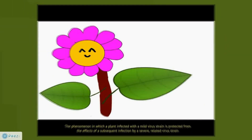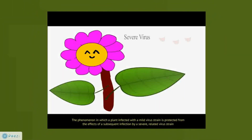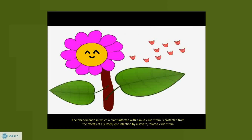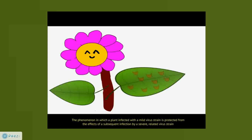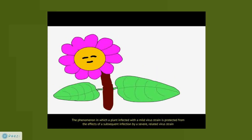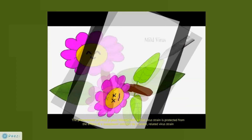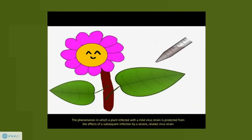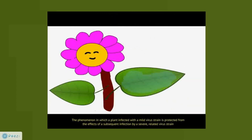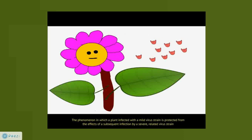Picture a plant that, under normal circumstances, would die shortly after infection by a severe virus strain. Cross-protection is a phenomenon in which a plant infected first with a mild virus strain is protected from the effects of a subsequent infection by a severe related virus strain.